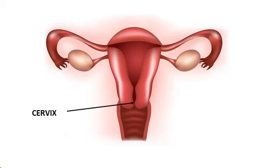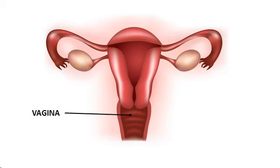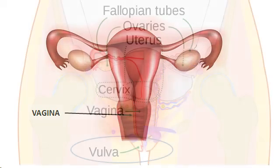The cervix is a narrow structure with an inch-long canal connecting the lower end of the uterus to the upper portion of the vagina. The vagina, or birth canal, is the hollow tube leading from the cervix to the outside of the body. Its wall is elastic, which allows it to expand during childbirth and sexual intercourse.